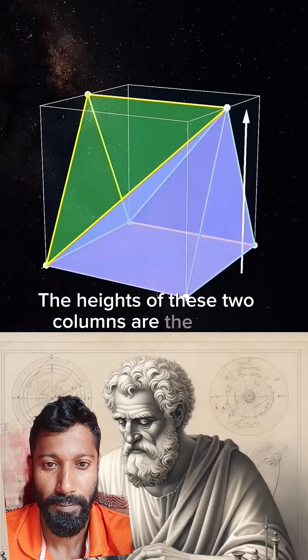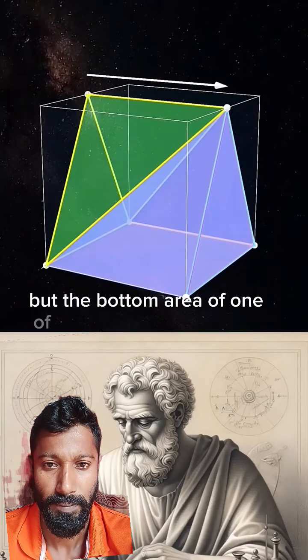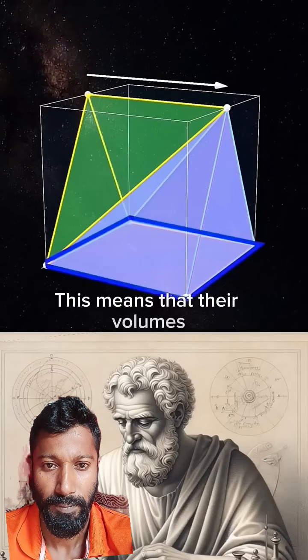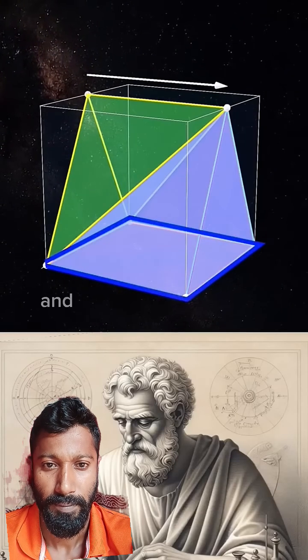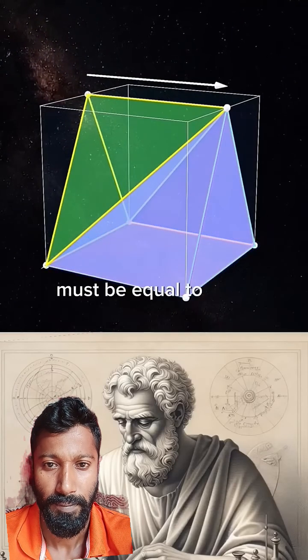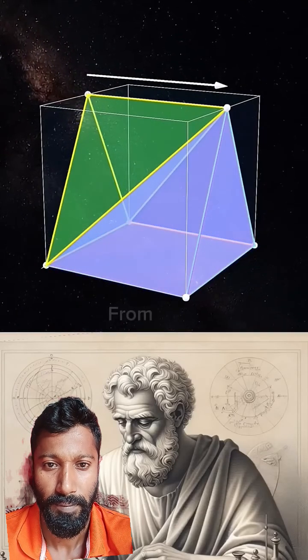The heights of these two pyramids are the same, but the bottom area of one of them is half of the other. This means that their volumes also have a half relationship, and the volume of these two pyramids must be equal to the volume of this triangular prism.